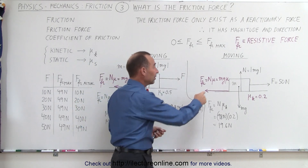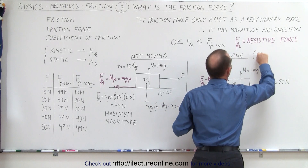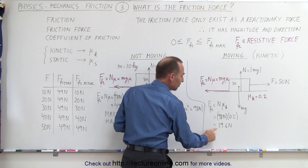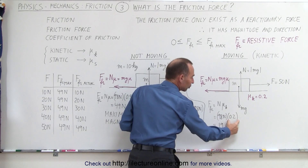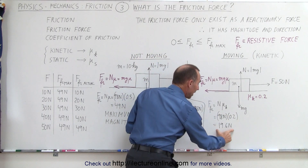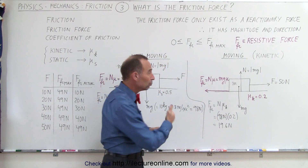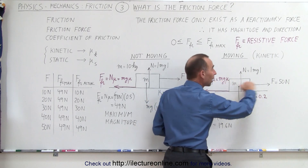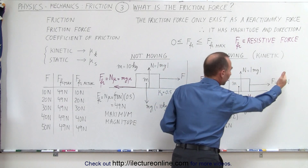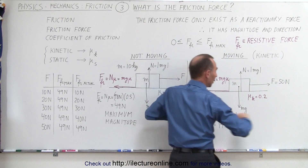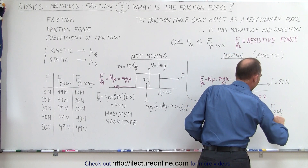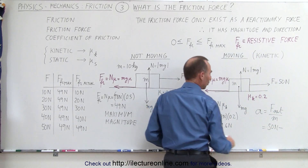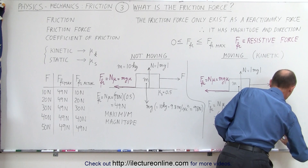When we calculate the maximum kinetic friction force for this moving situation, we multiply the weight times the kinetic coefficient of friction. In this case, the maximum kinetic friction force is 19.6 newtons. Therefore, when moving, anytime the applied force exceeds 19.6 newtons there will be a net force and an acceleration to the right. The acceleration equals the net force divided by the mass — which is the applied force of 50 newtons minus the kinetic friction force of 19.6 newtons, divided by the mass of 10 kilograms.